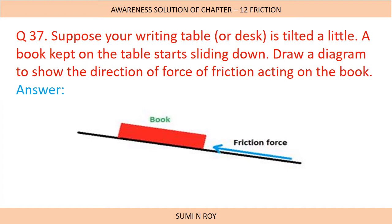The next question: Suppose your writing table is tilted a little and a book kept on the table starts sliding down. Draw a diagram to show the direction of friction acting on the book. The diagram shows that friction force is acting upward, because the book is sliding downwards and friction is an opposing force acting in the opposite direction. The arrow shown in the figure is very important — it shows the direction of frictional force.